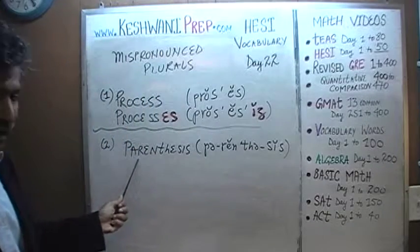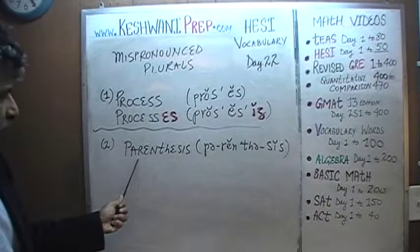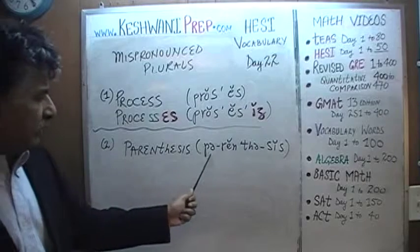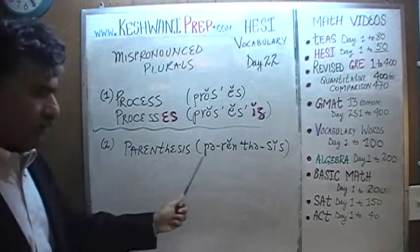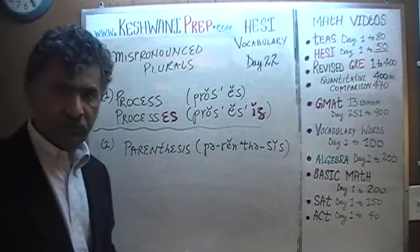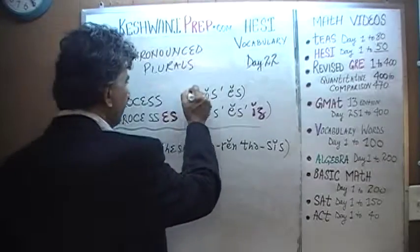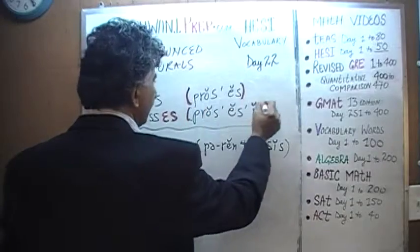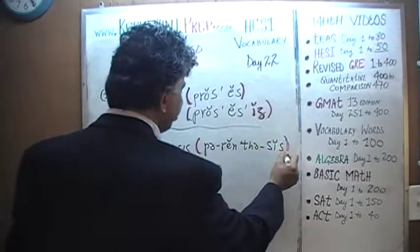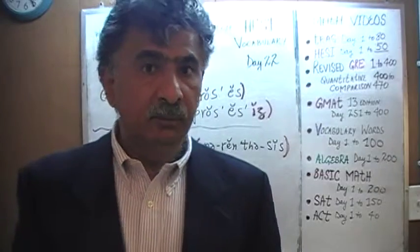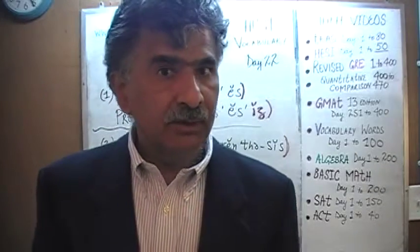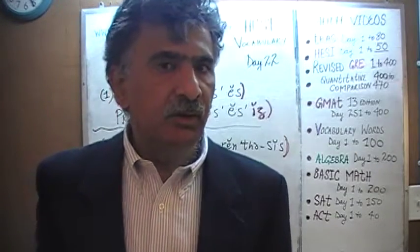The next word is very straightforward. These are all very simple words, by the way. Parenthesis. Of course you know what a parenthesis is. Parenthesis is a bracket. There is a parenthesis right here, there is another parenthesis right here. There is one more here. There are three of them. Notice how I use the pronoun.